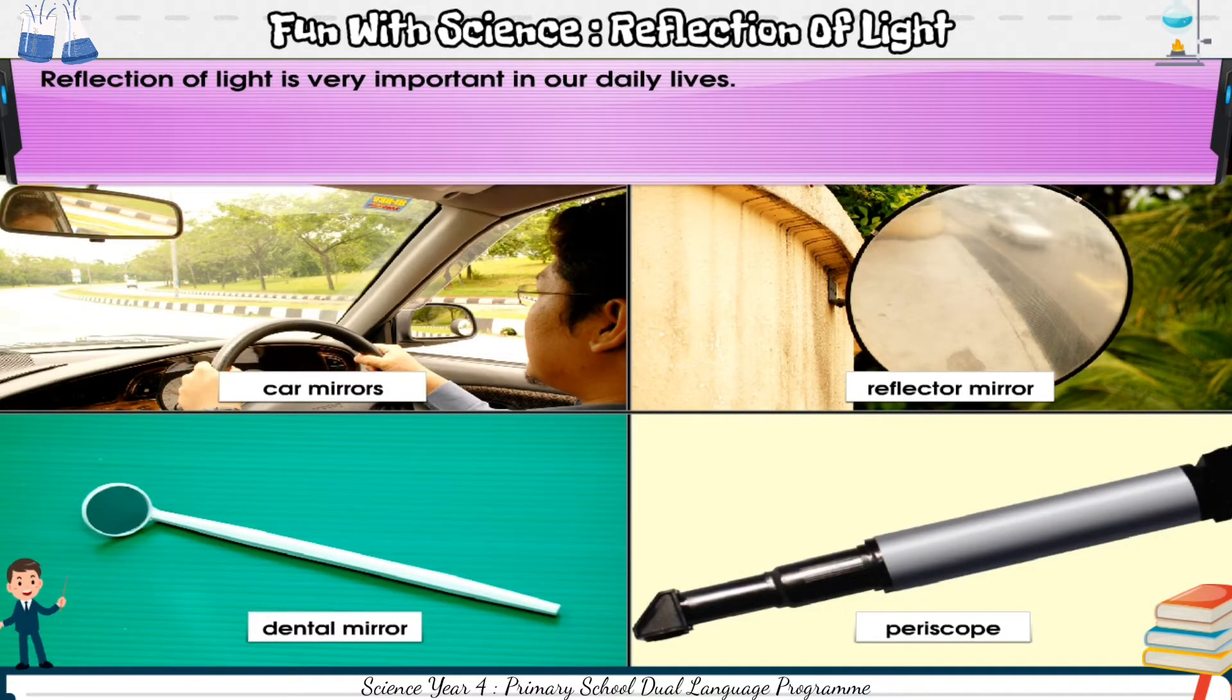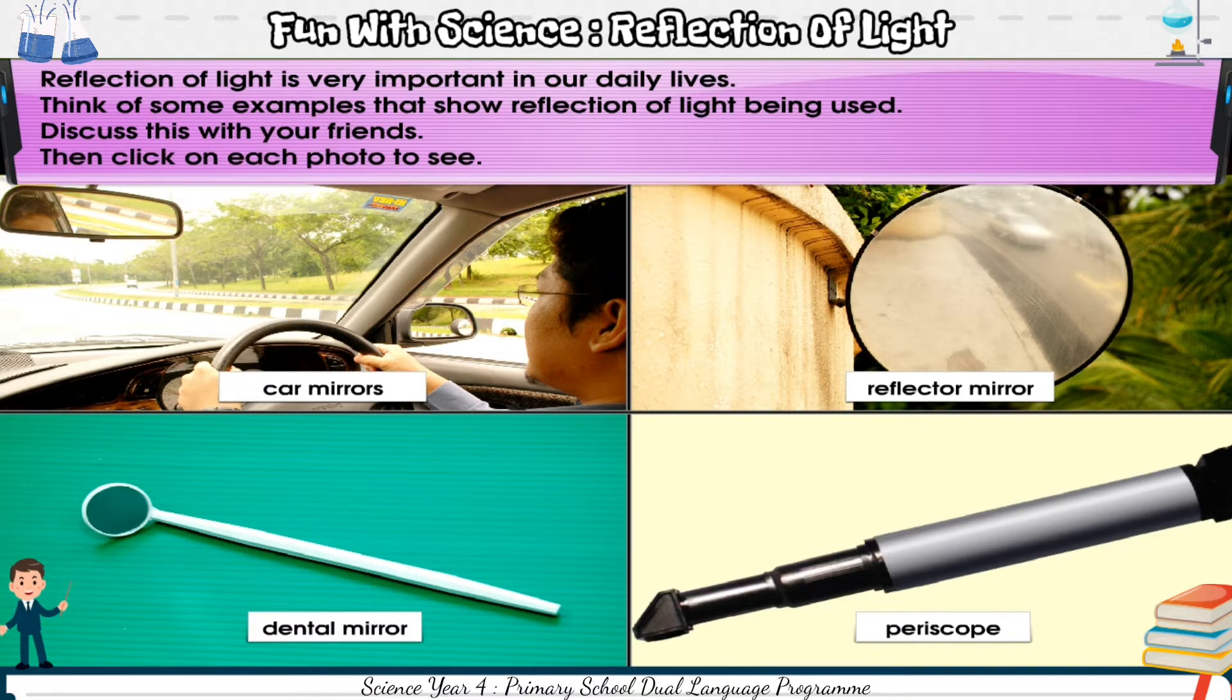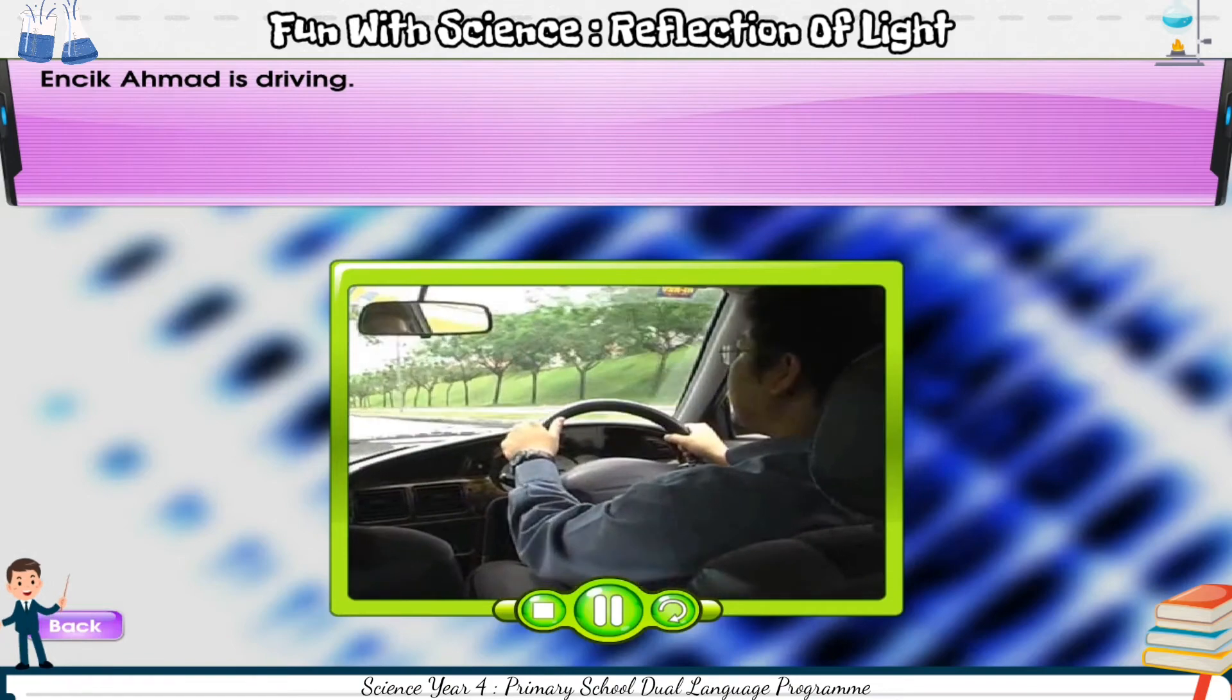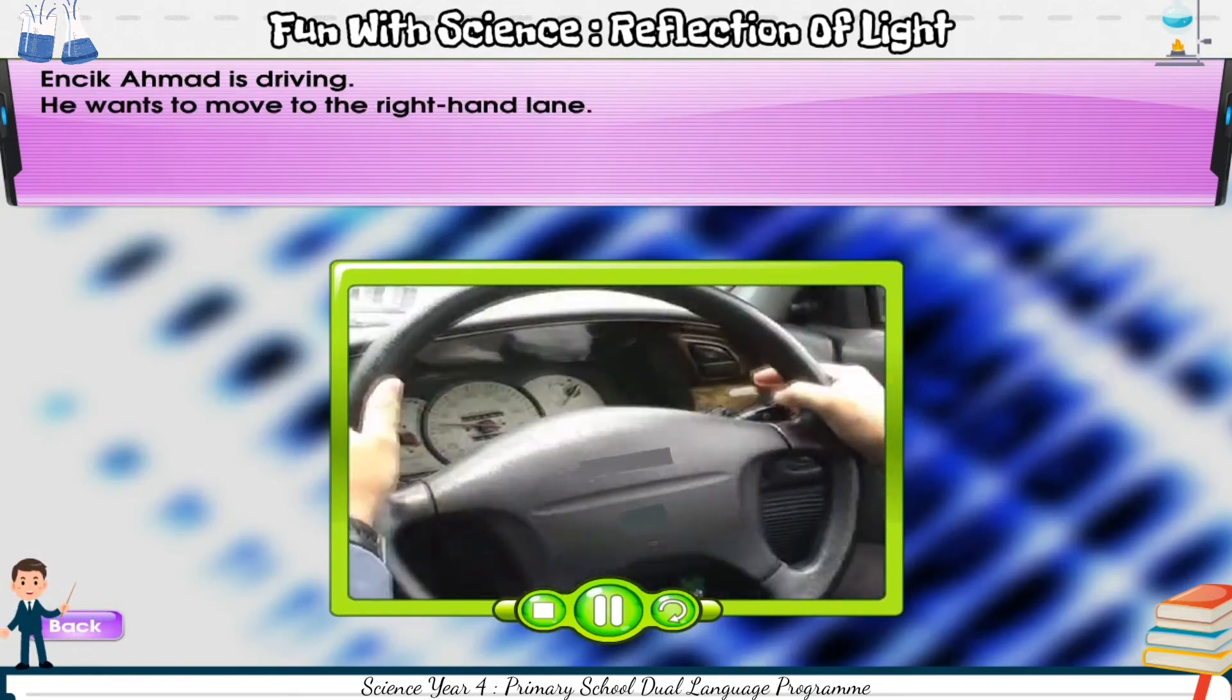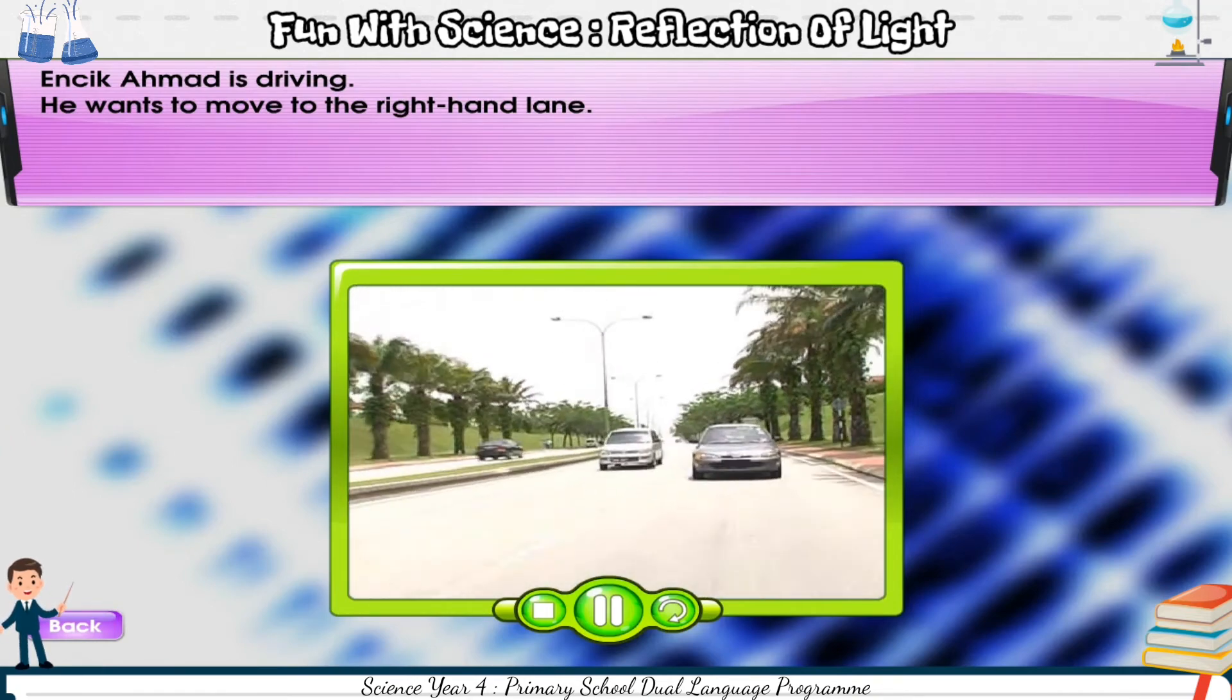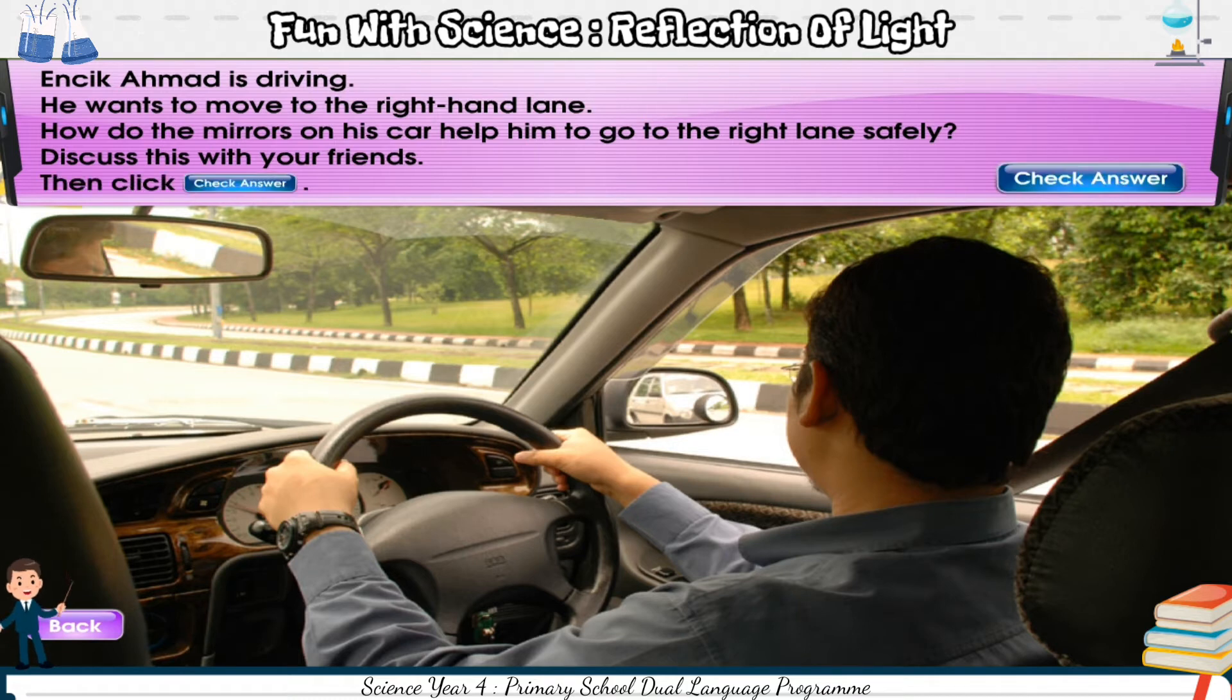Reflection of light is very important in our daily lives. Think of some examples that show reflection of light being used. Discuss this with your friends. Then, click on each photo to see. Incik Ahmad is driving. He wants to move to the right-hand lane. How do the mirrors on his car help him to go to the right lane safely? Discuss this with your friends. Then, click check answer.